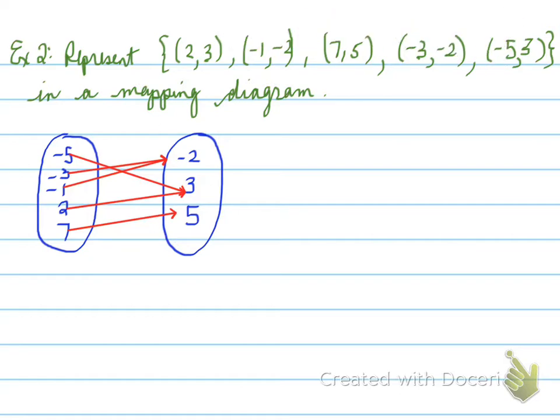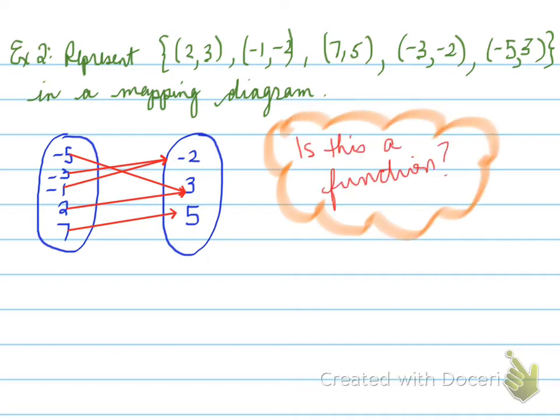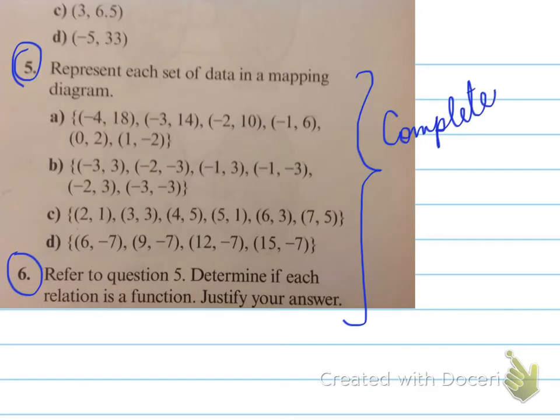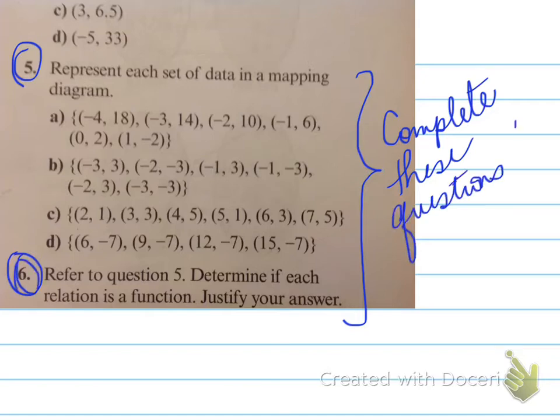Now, question for you is, is this a function? That would be an extra question, maybe. Is this a function? Well, let's check. For every x, there is only one y. So yes, guys, this is a function. Okay, so here's some more questions, okay, that you can actually represent each set of data in a mapping diagram, and then refer to question 5 to determine if each relation is a function. So here's some extra mapping diagram that you can do in addition to the homework that was assigned. All right, folks, have a numerical day. Take care.